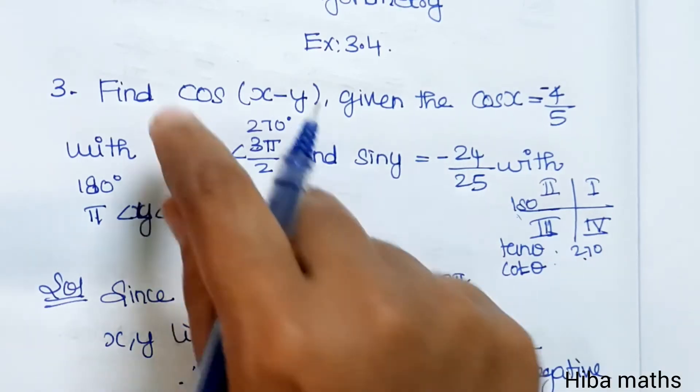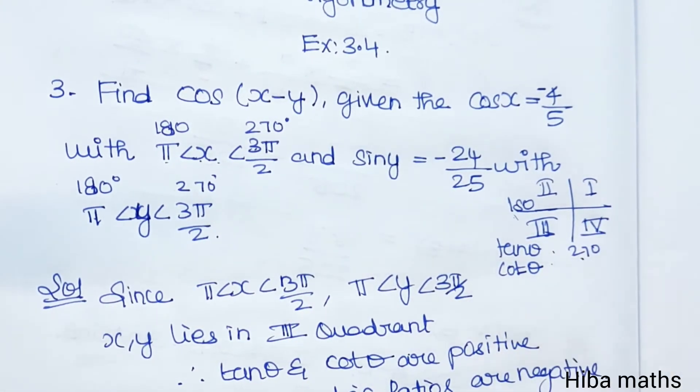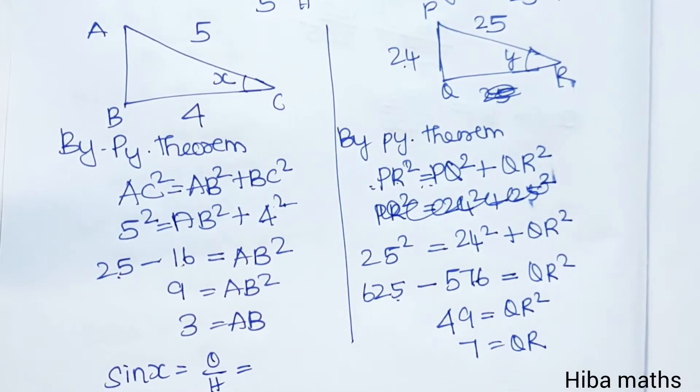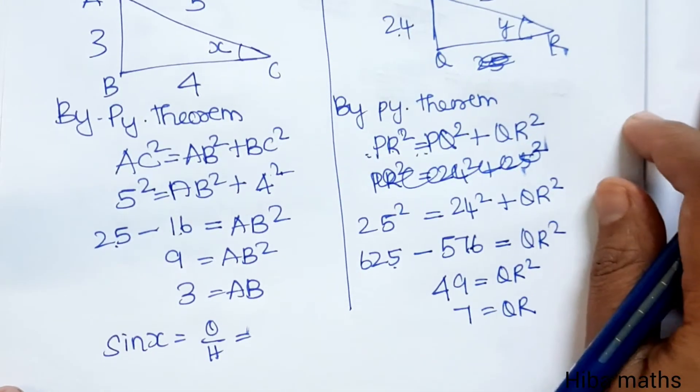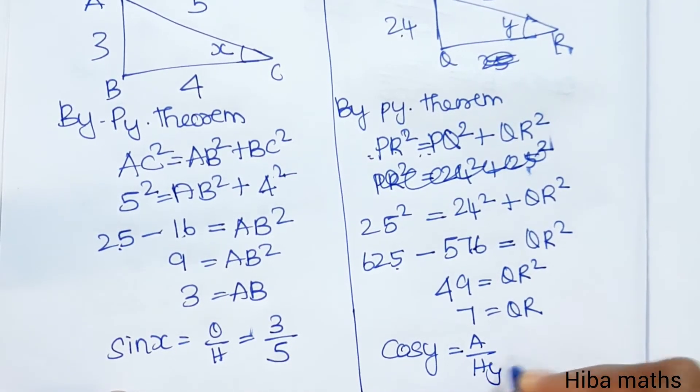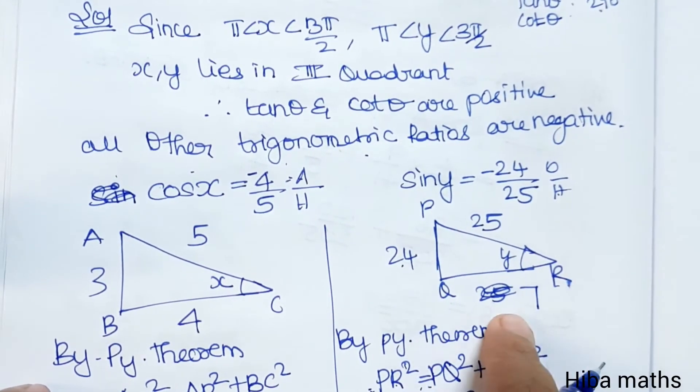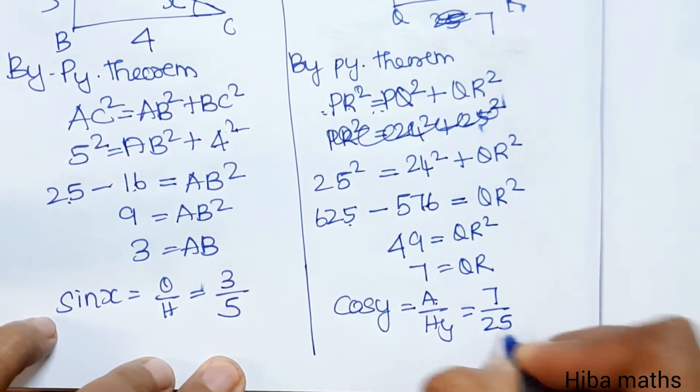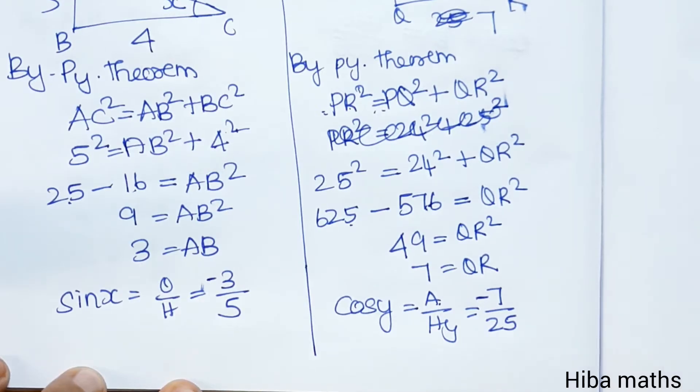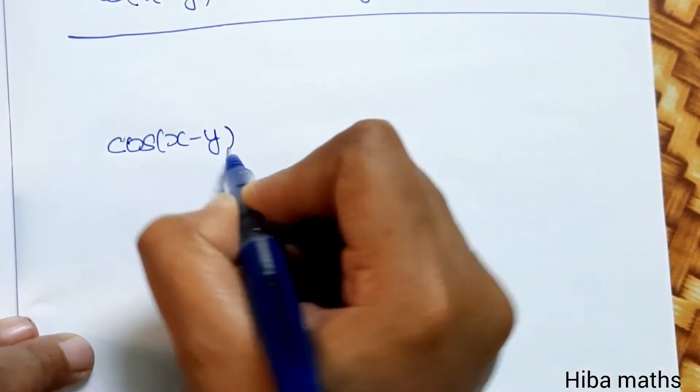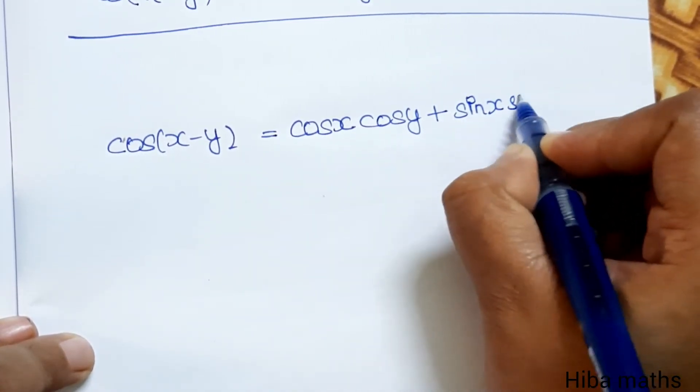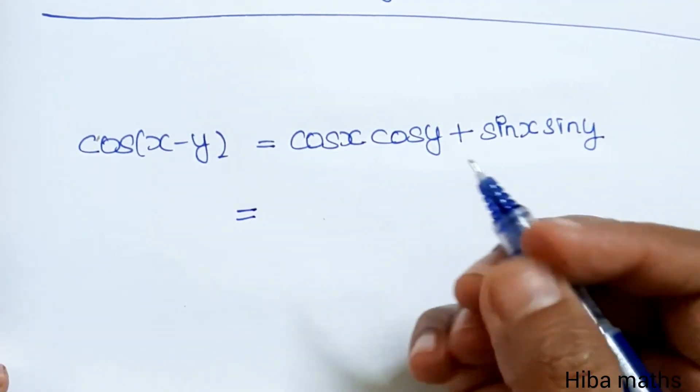For cos of x minus y, we use the formula: cos(x-y) equals cos x cos y plus sin x sin y. Now we have to substitute the values of cos x, cos y, sin x, and sin y.